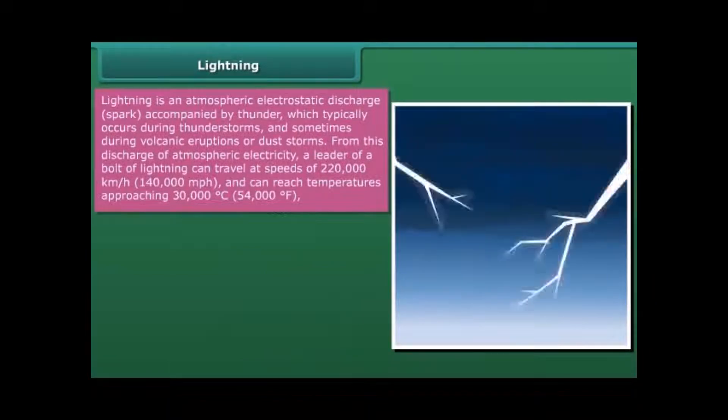Lightning is an atmospheric electrostatic discharge spark accompanied by thunder which typically occurs during thunderstorms and sometimes during volcanic eruptions or dust storms. From this discharge of atmospheric electricity, a leader of a bolt of lightning can travel at speeds of 220,000 km per hour and can reach temperatures approaching 30,000 degrees Celsius, that is 54,000 Fahrenheit.